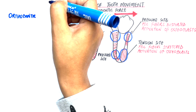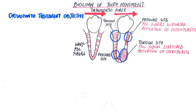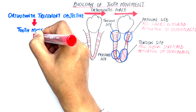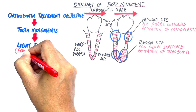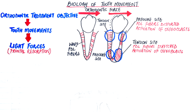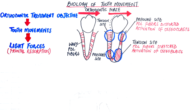The objective of orthodontic treatment is to produce tooth movement as much as possible by frontal resorption through light forces, rather than by undermining resorption with heavy forces. By the end of this video, we will understand the difference between frontal and undermining resorption of the alveolar bone as a reaction to light and heavy forces.